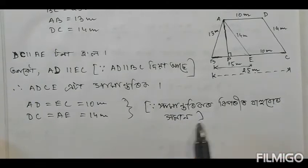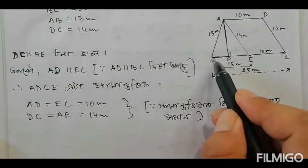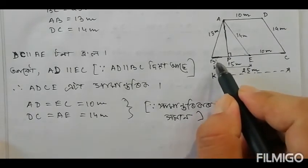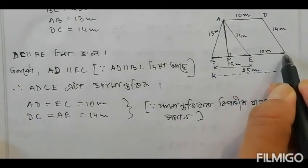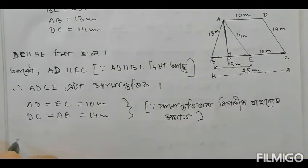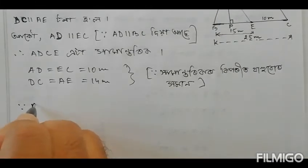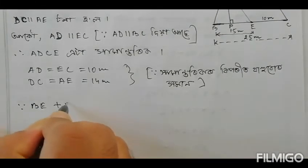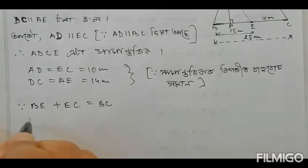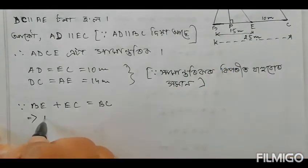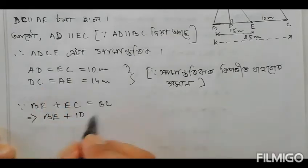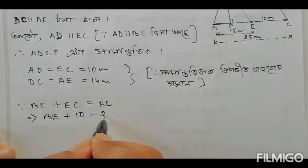I'll explain quickly. This is the result of this formula. The formula uses values: BC is 10m and BC is 25m, giving us the required measurements for the triangle.